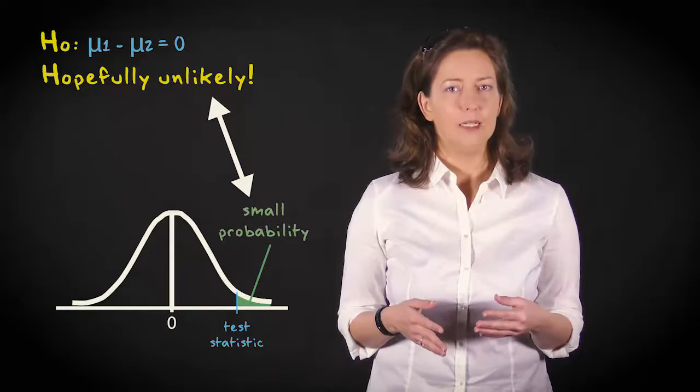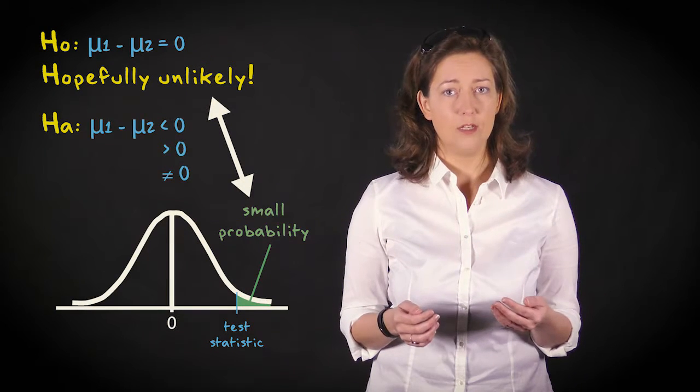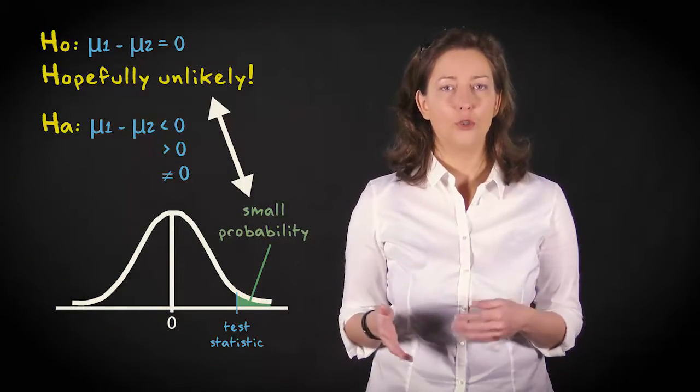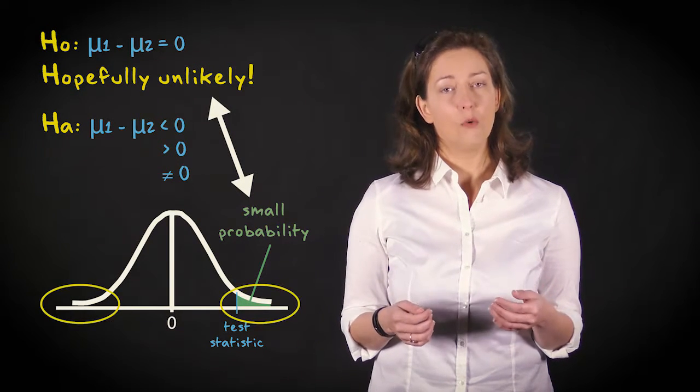To determine the probability, we have to specify beforehand what our alternative hypothesis is, whether we expect the population value to be larger or smaller, or just different from the null value, so that we know in which tail to look.